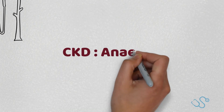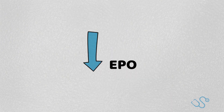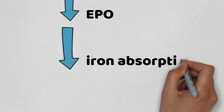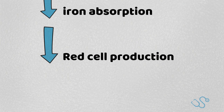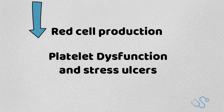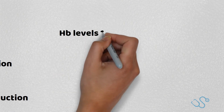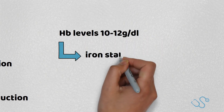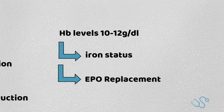Finally, anaemia in CKD. The kidneys play a massive role in regulating haemoglobin levels, and when they're not working the following occurs: there's a reduction in erythropoietin or EPO, which normally stimulates red cell production; a reduction in iron absorption; a reduction in red cell production often due to uraemia; and additionally, complications from CKD such as platelet dysfunction and stress ulcers can further reduce haemoglobin. NICE has recommended haemoglobin levels between 10 and 12 grams per decilitre, with iron status and replacement being an important component. EPO replacement is also considered in some severe cases.